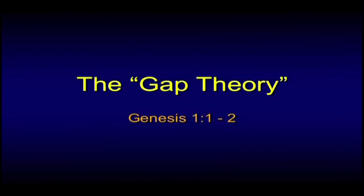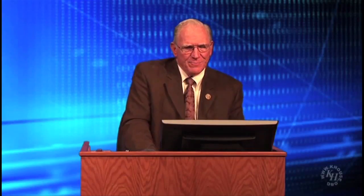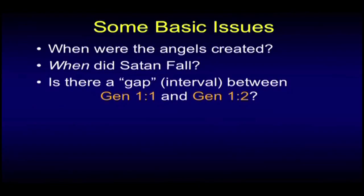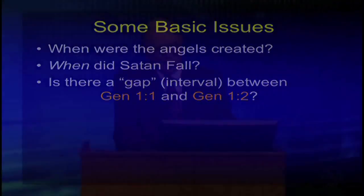There is a theory called the gap theory, and there are two kinds of people that deal with it: those that dismiss it as nonsense, or those that misapply it. We're going to try to do neither. All I want to do is help you understand why some of us hold the view that there's an interval in between the first two verses of the book of Genesis. When were the angels created? When did Satan fall? Is there a gap? Those are the issues before us.